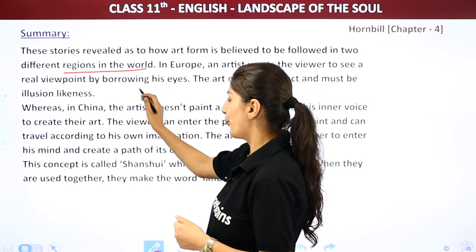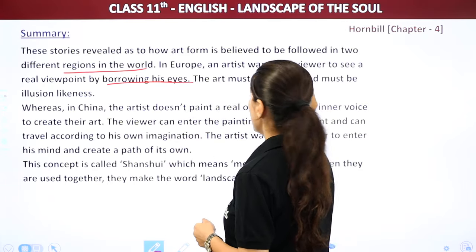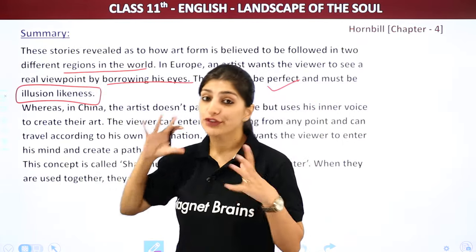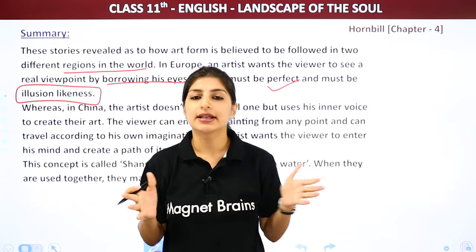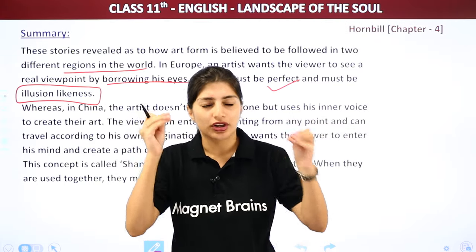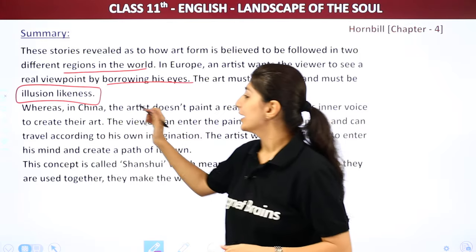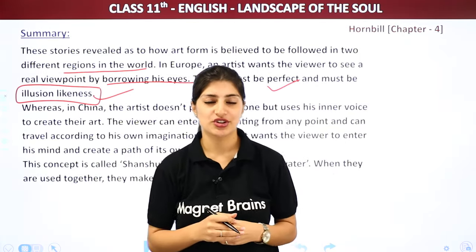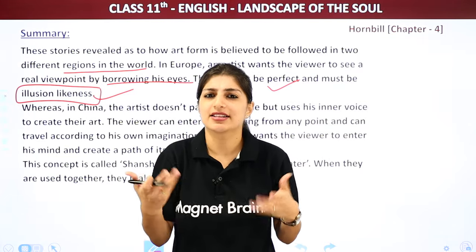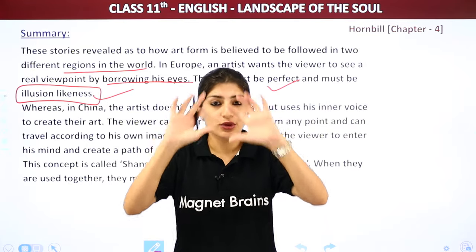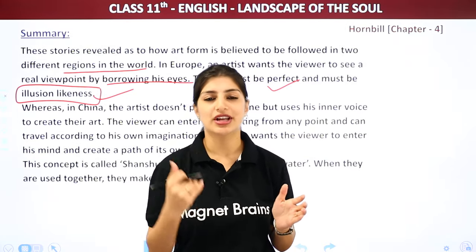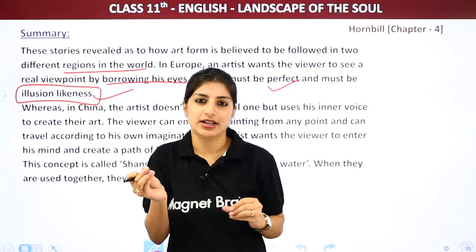In Europe, an artist wants a viewer to see a real viewpoint by borrowing his eyes. The art must be perfect and must be of illusion likeness. Toh jo European art hai, us mein painter chahta hai ki aap jo viewer hai, woh painter ki eyes borrow kare — yani jaisi painter ne painting banayi hai, aap uski eyes borrow karke exactly waisi hi dekhe, jaisa painter ne banayi hai. Illusion likeness — painting mein banai kya — ek fly — aur dikhi kya — real fly. Jo cheez hoti nahi hai, lekin real jaisi dikhti hai. Delicate realism dikhna chahiye, lekin woh real hota nahi hai.